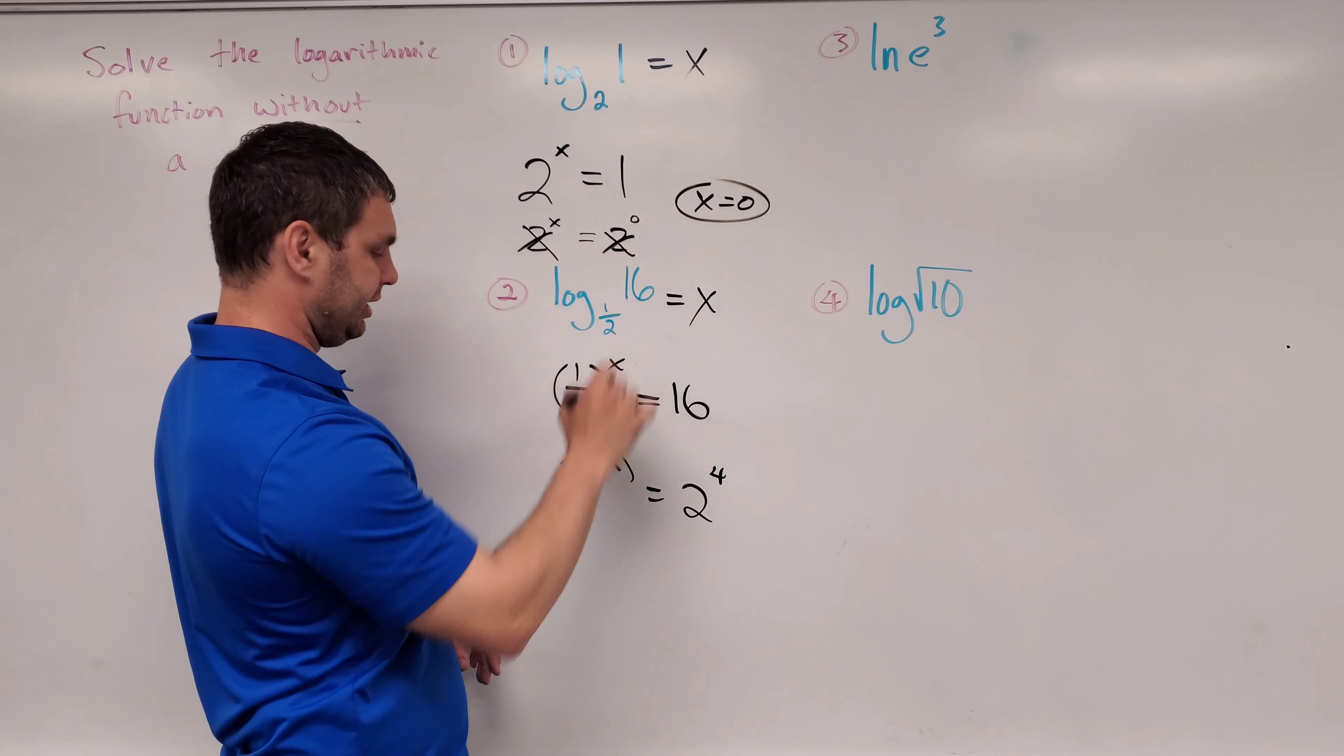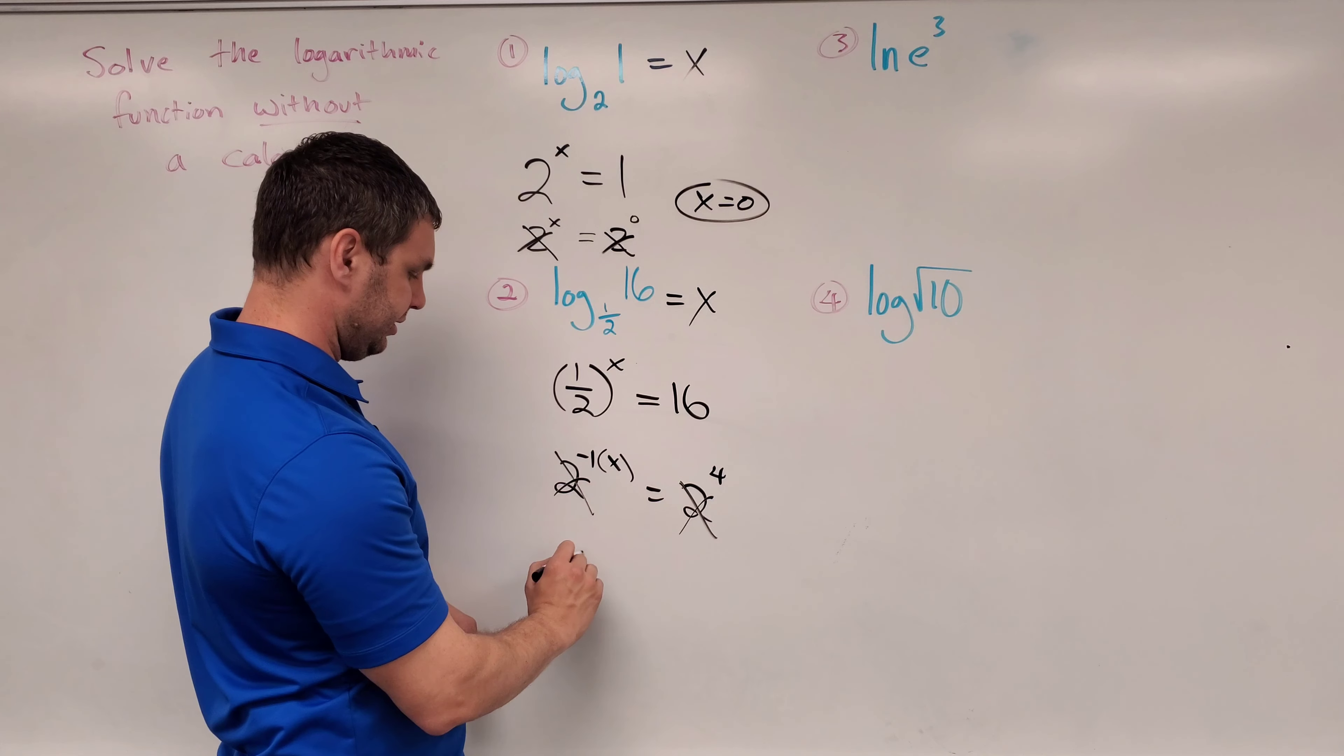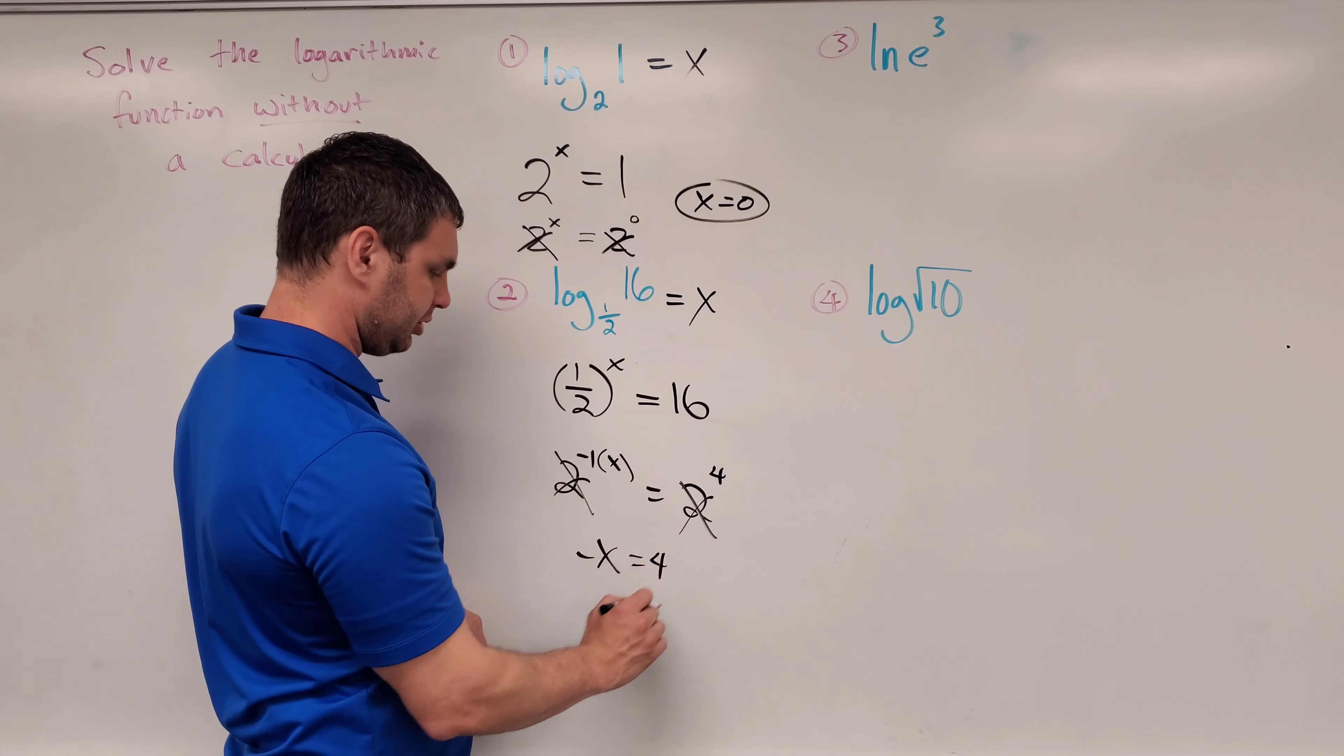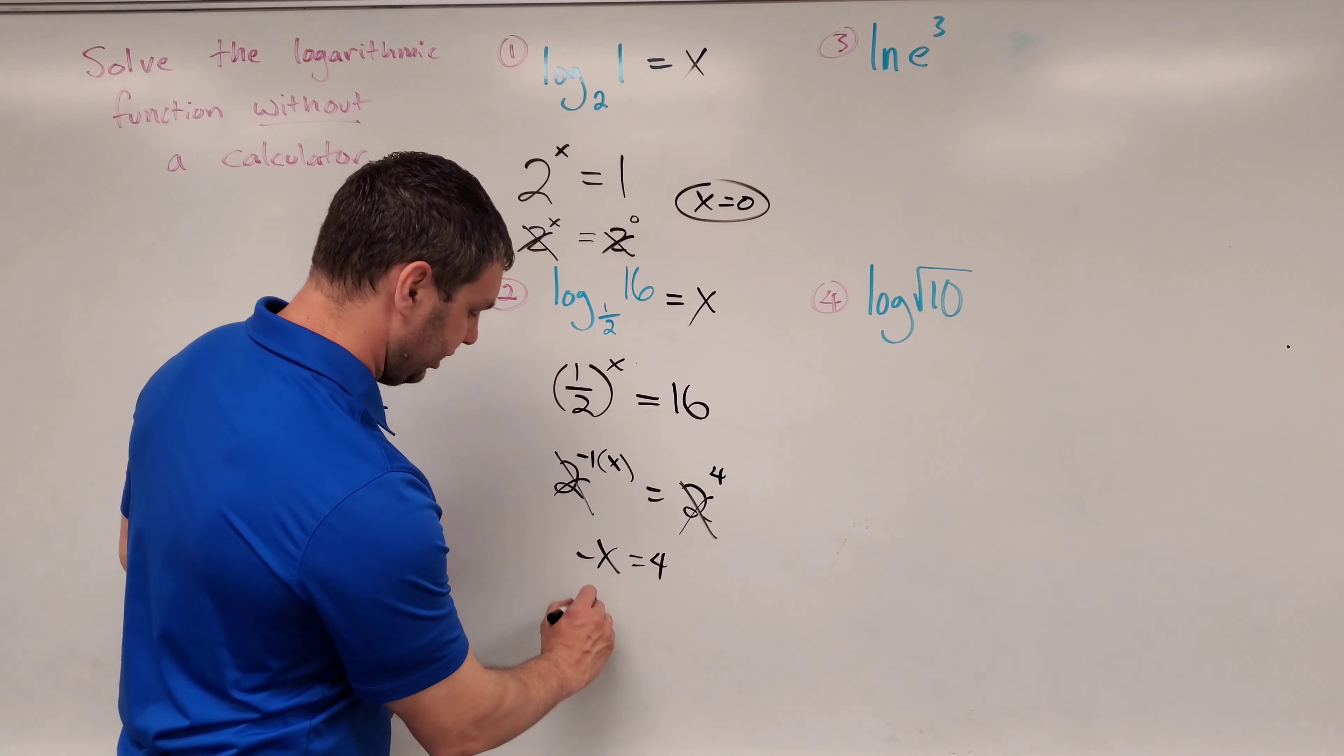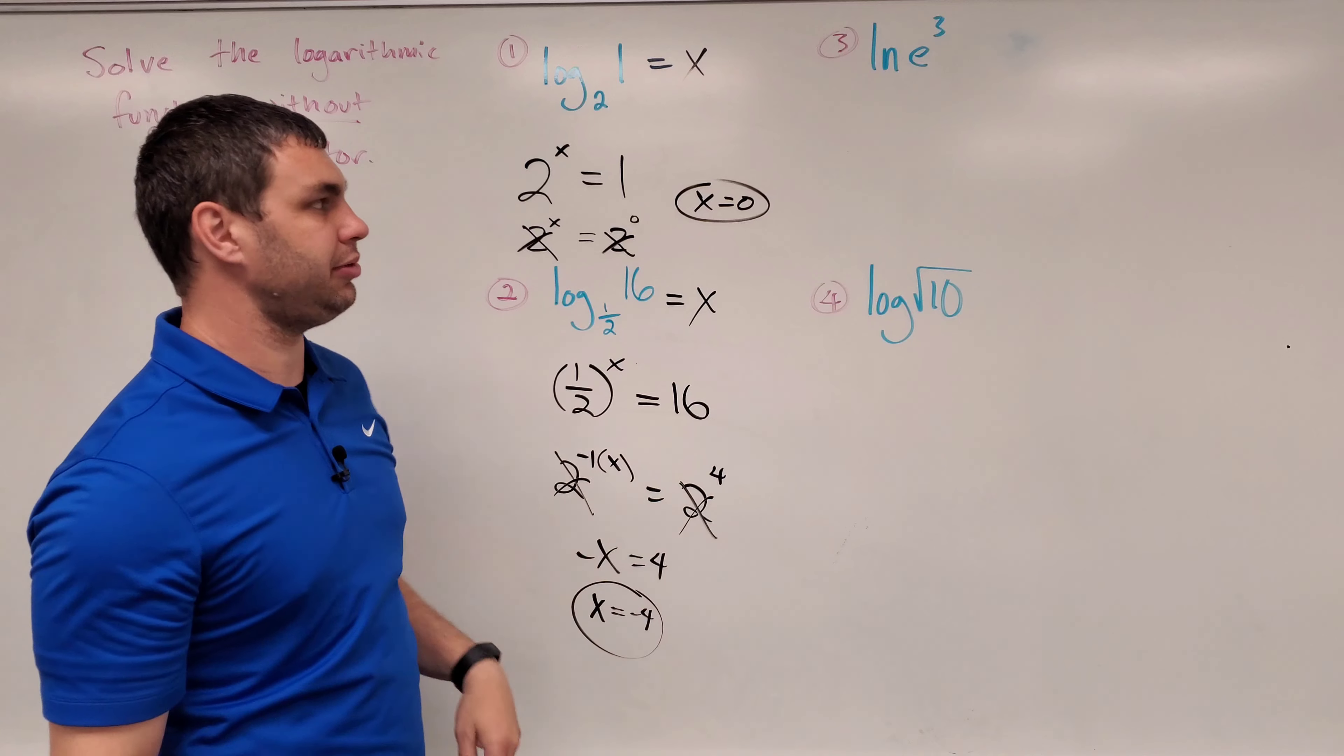Since I have the bases the same, just like I did in the last one, they are going to cancel. Negative times x, or negative 1 times x is negative x equals 4 divided by negative 1. And positive x equals negative 4. Just like that. What about number 3?